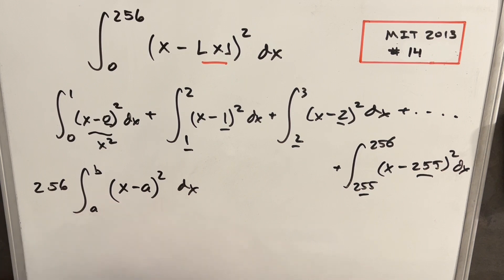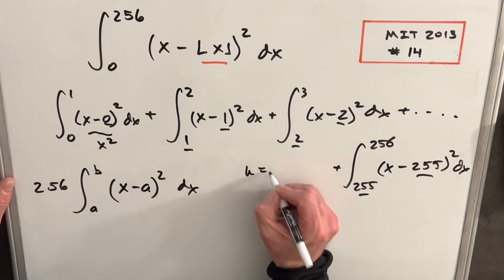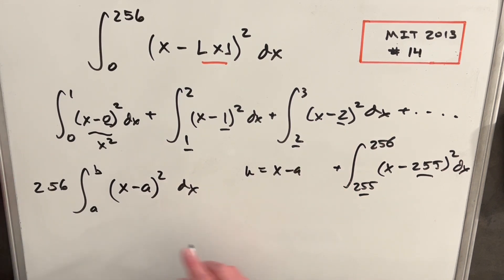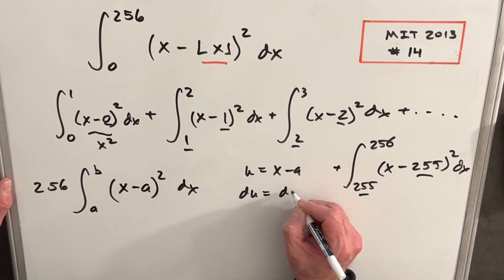What I can do is approach this with a u substitution. Let's say I'm going to make my u equal to x minus a, just knowing that's going to simplify this pretty nicely. And then our du is going to be just equal to dx.